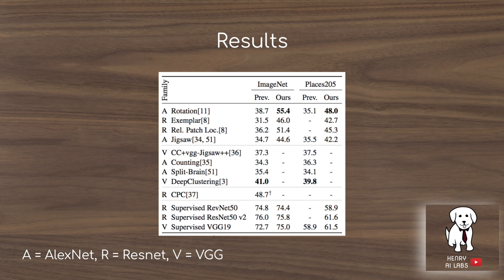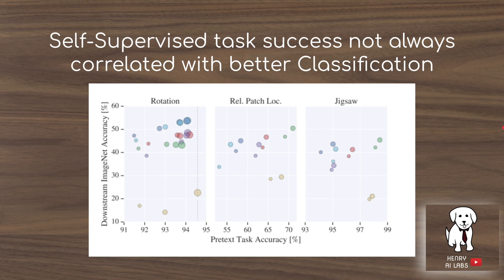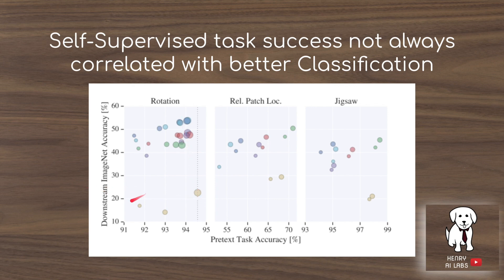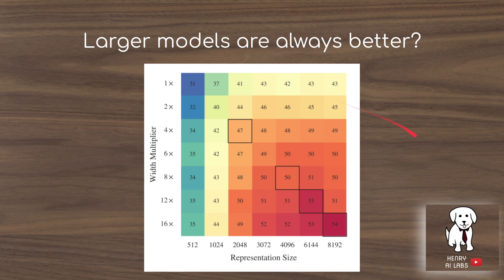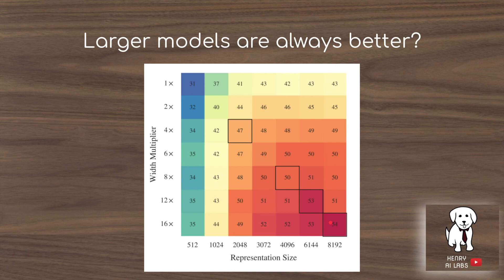Applying the new Wide ResNet to prior self-supervised learning papers shows striking gains: the original rotation paper using an AlexNet-style architecture achieves 38.7% on ImageNet, while their model achieves about 20% better and gets much closer to fully supervised benchmarks. Notably, success on the self-supervised task isn't always correlated with ImageNet accuracy — one point achieves 95% on rotation but only about 20% on ImageNet accuracy. The key takeaway is that larger models with a higher width multiplier, combined with larger extracted feature vectors, yield better downstream ImageNet classification performance.